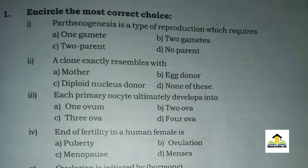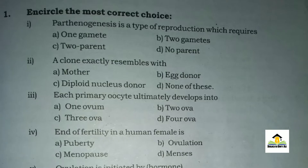MCQ number one: Parthenogenesis is the type of reproduction which requires — A: 1 gamete, B: 2 gametes, C: 2 parents, D: no parent. The right answer for this MCQ is A: 1 gamete. MCQ number two: A clone exactly resembles with — A: mother, B: egg donor...